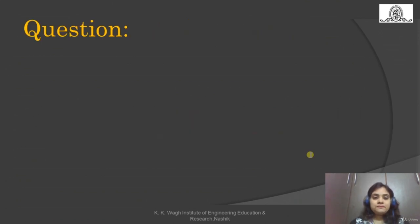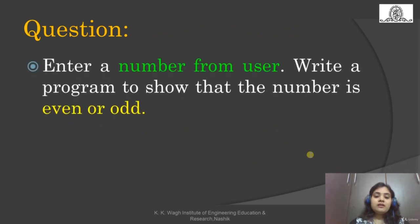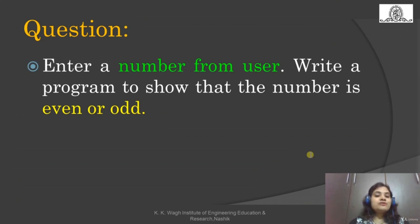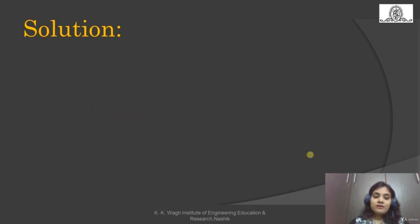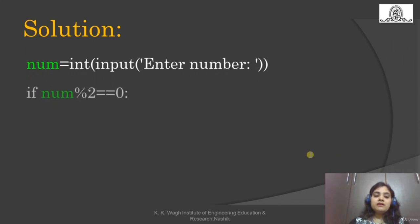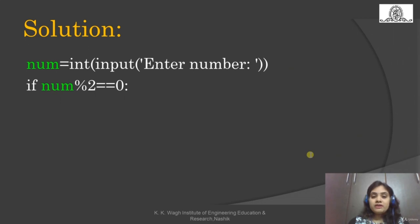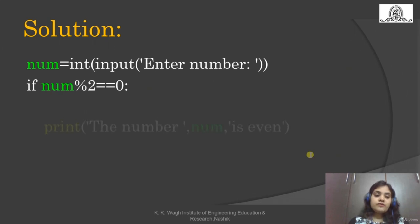Question: enter a number from user and write a program to show whether the number is even or odd. Enter the number and check the condition. The test to find if a number is even or odd is modulo 2 — divide by 2 and find the remainder. If the remainder is 0, the number is even. If the remainder is 1, the number is odd.